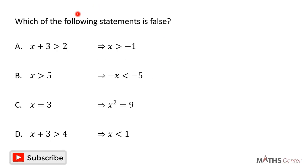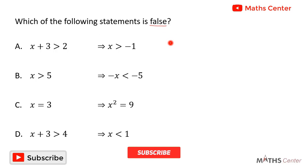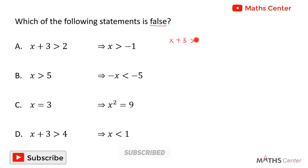This is a multiple choice question, so we solve the question and after that we pick the correct option. We are going to look for the statement that is false. The first statement is: x plus 3 is greater than 2 implies x is greater than negative 1. Let's solve this inequality.